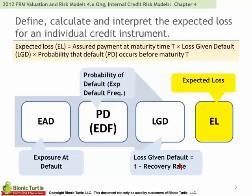Also keep in mind that loss given default is the same thing as one minus the recovery rate. On the exam, this could trip you up because you could be given either the recovery rate or the loss given default. Make sure you're using the right one: if we want expected loss, we multiply the probability of default by the loss conditional on default.